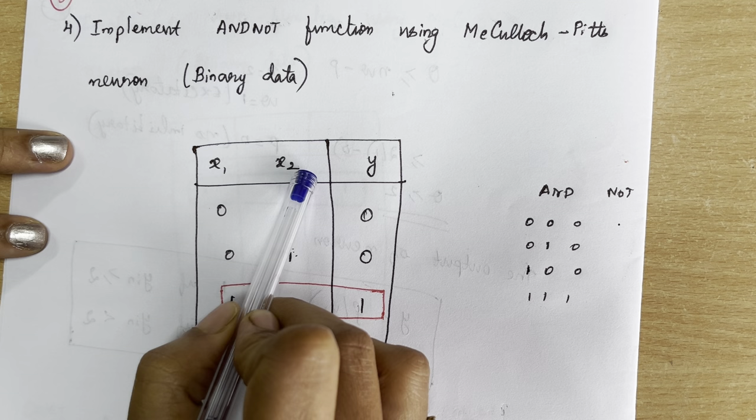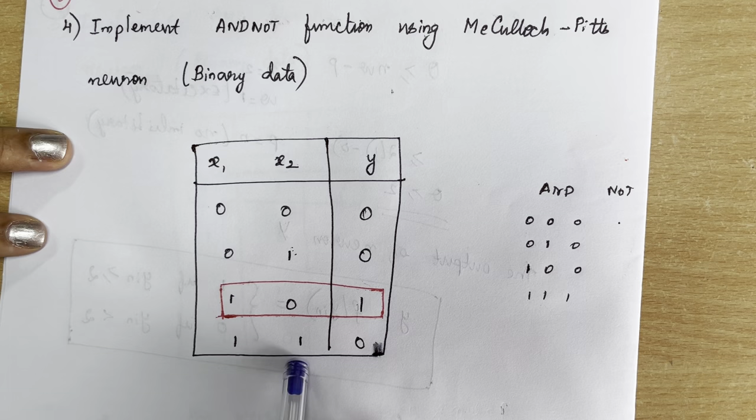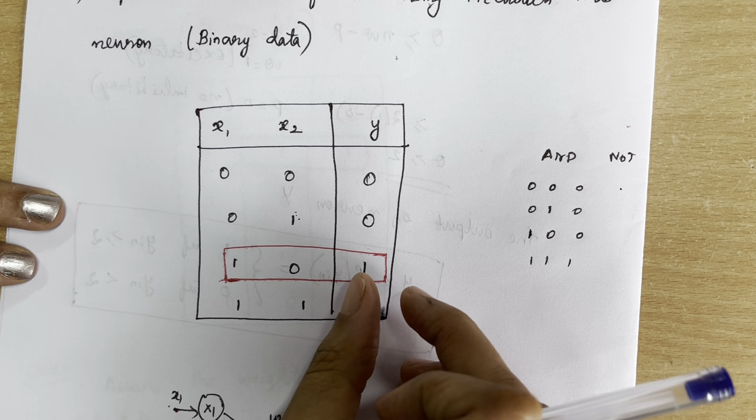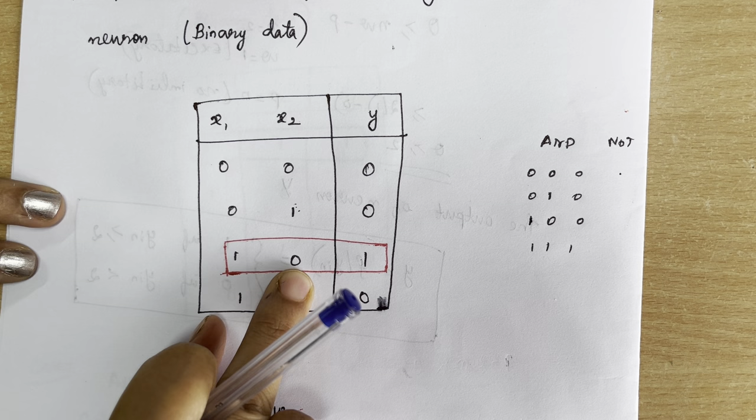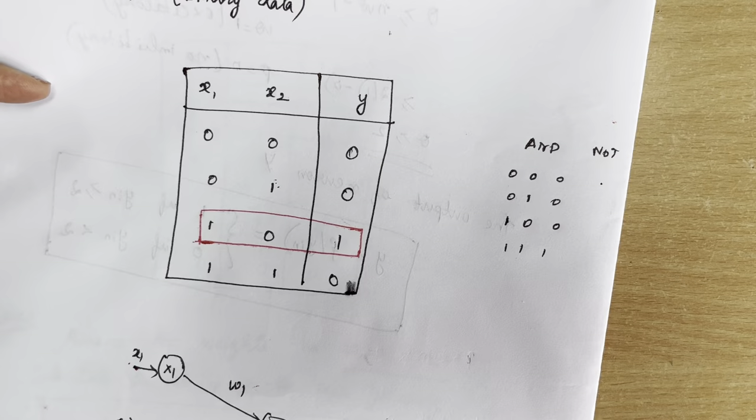There are two inputs x1 and x2, and one output y. Writing all possible input combinations: (0,0), (0,1), (1,0), and (1,1). For the AND-NOT function, the output is 1 only when x1=1 and x2=0 — that is, only the third case gives output 1. For all other cases the output is 0.